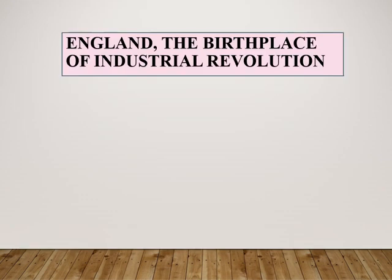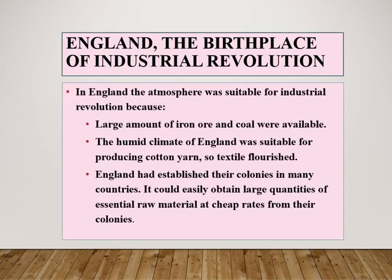England was the birthplace of the Industrial Revolution. In England, the atmosphere was suitable — large amounts of iron ore and coal were available, and the humid climate of England was suitable for producing cotton yarn. With these favorable conditions, textile industries flourished. At that time, England had established colonies in many countries, so England could easily obtain large quantities of essential raw materials at cheap rates from its colonies.